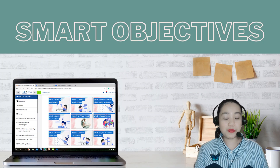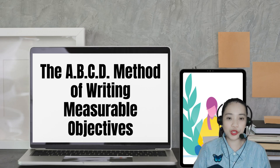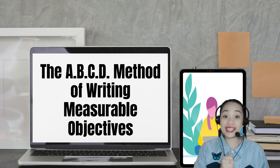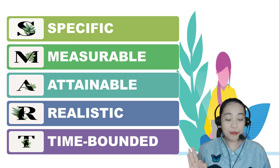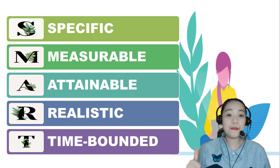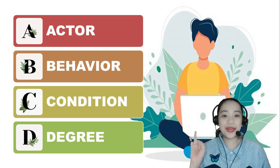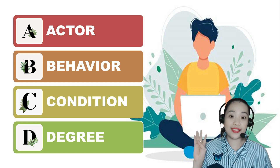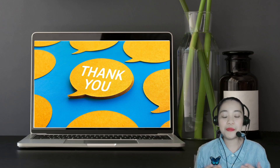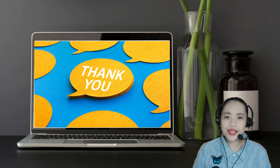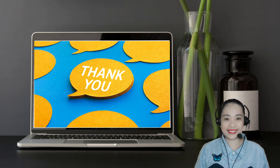That's it! The SMART objectives and Mager's ABCD model for instructional objectives. Again, SMART objectives are specific, measurable, attainable, realistic, and time-bounded. The ABCD model covers actor or audience, behavior, condition, and degree of mastery. I hope you learned something and I hope you can follow the ABCD model and better make your objectives SMART. Thank you, everyone, and have a great day. Bye!